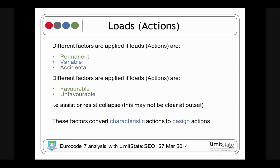If you've used Eurocode 7, you'll be aware that loads or actions are factored according to their type and favorability — whether they are permanent, variable, or accidental — and whether the loads are favorable or unfavorable, i.e., whether they assist or resist collapse. This distinction might not be clear at the outset when analyzing a problem. The purpose of these factors is to convert characteristic actions — conservative estimates of the applied actions — into design actions used for the design checks.